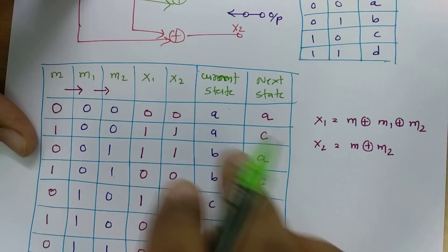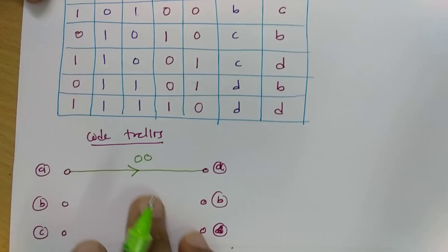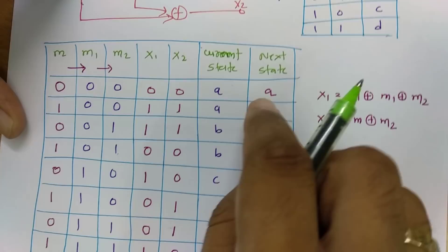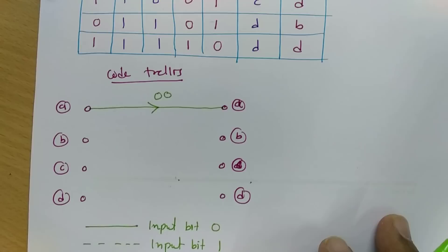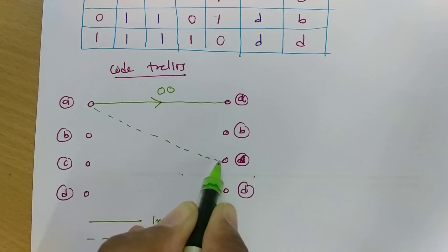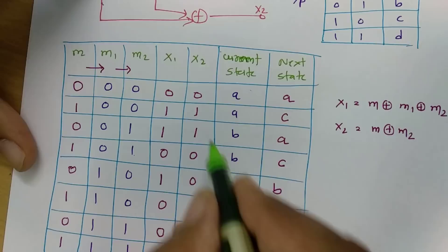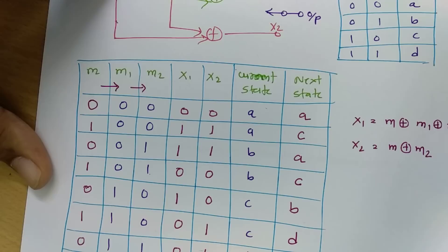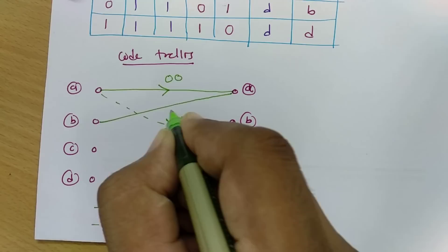Solid means input is 0 and dashed means input is 1. If current state is A and input is 1, next state will be C. So it goes from A to C by dashed line, and the output is 11, so we label it 11 on the line. If current state is B and input is 0, next state will be A. So from B to A there will be a solid line, and output is 11, so we label it 11.